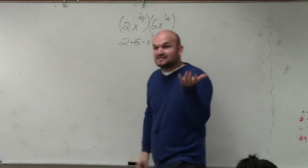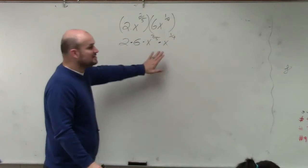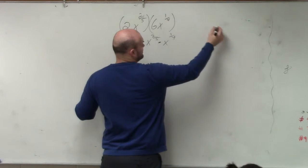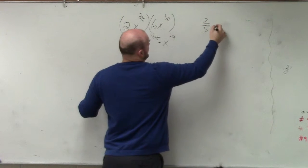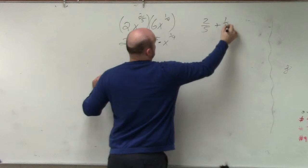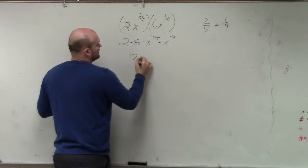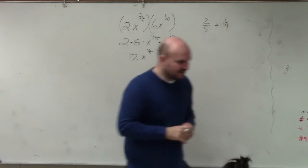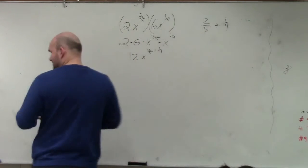So as long as the exponents have the same base of x, then to multiply using the power rule, I need to add them, right? So I'm going to do the addition over here because we get 12 times x to the 2 fifths plus 1 fourth. That is using the power rule of exponents.